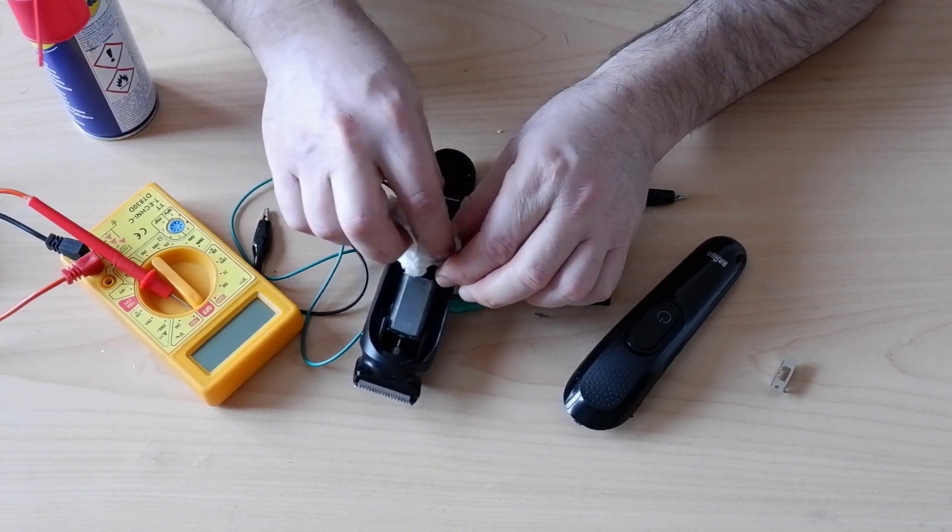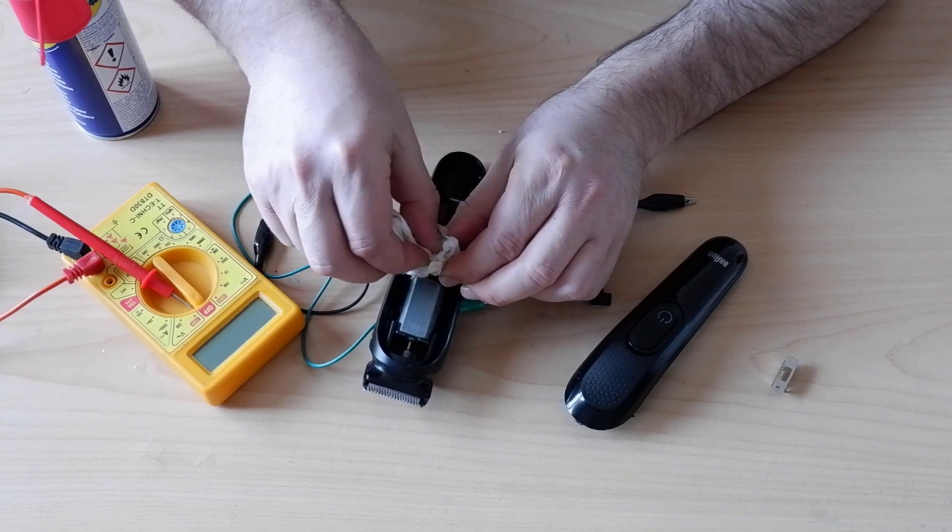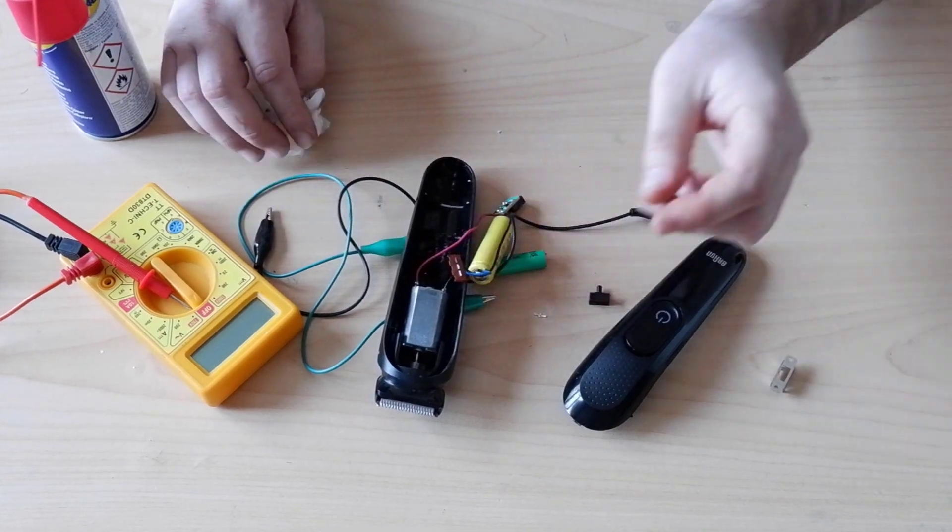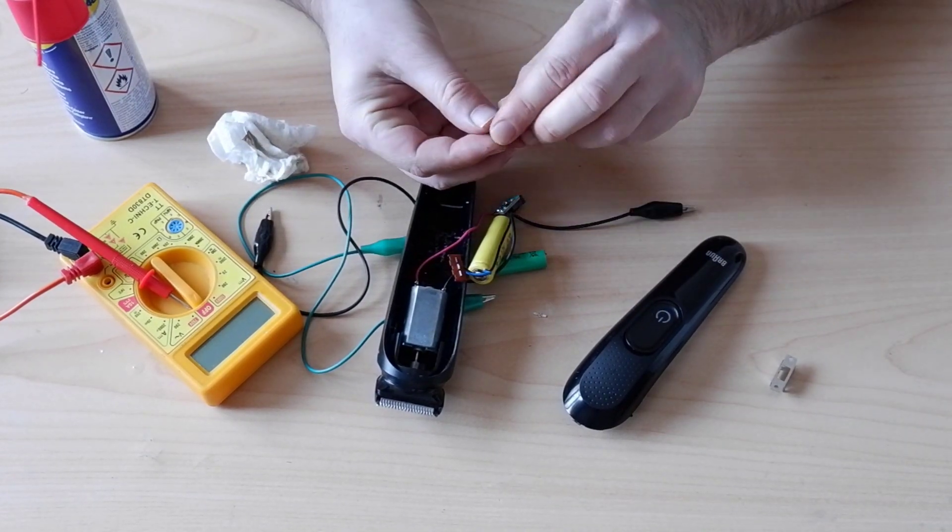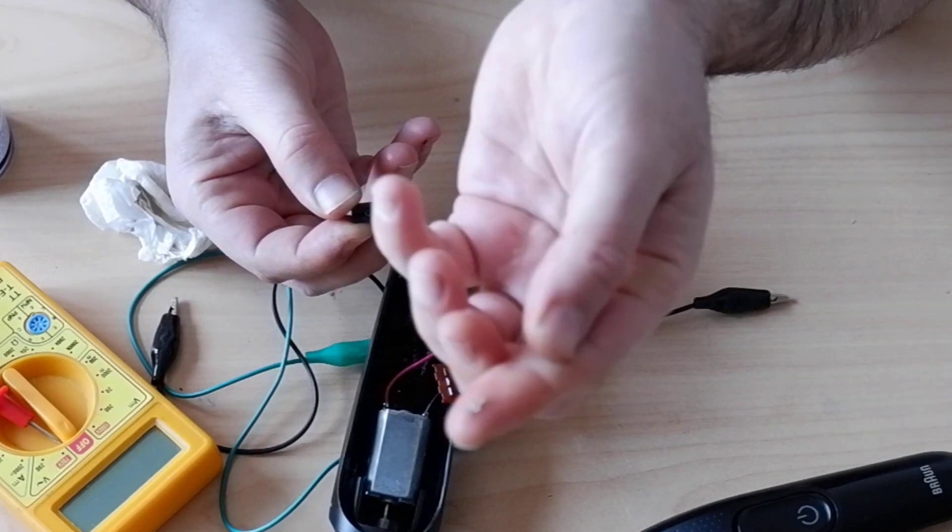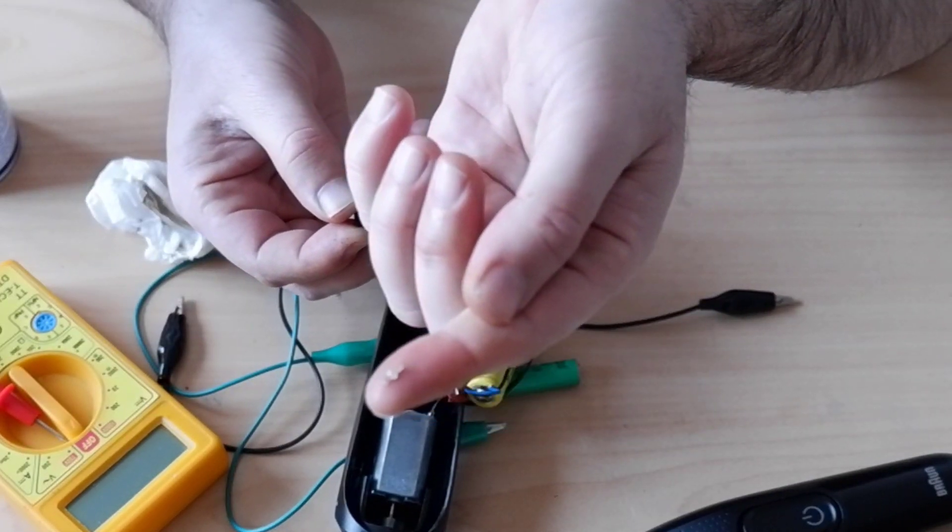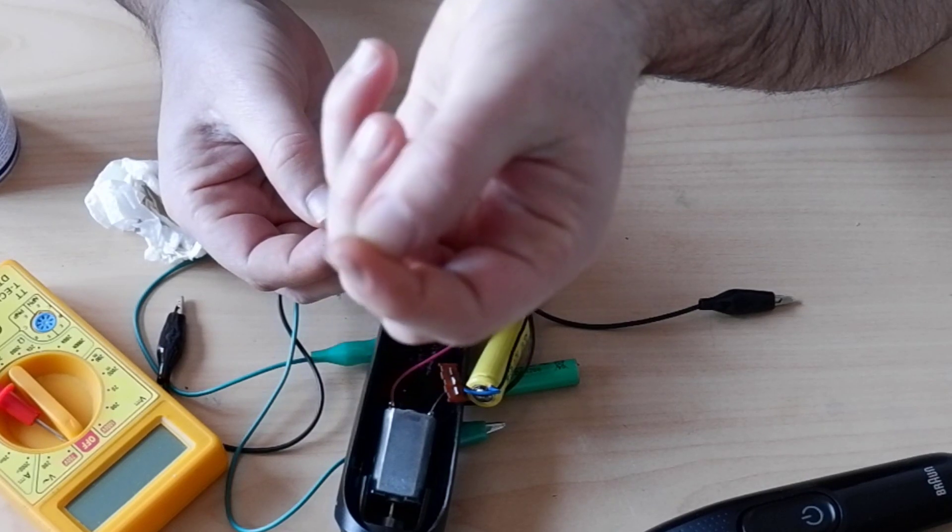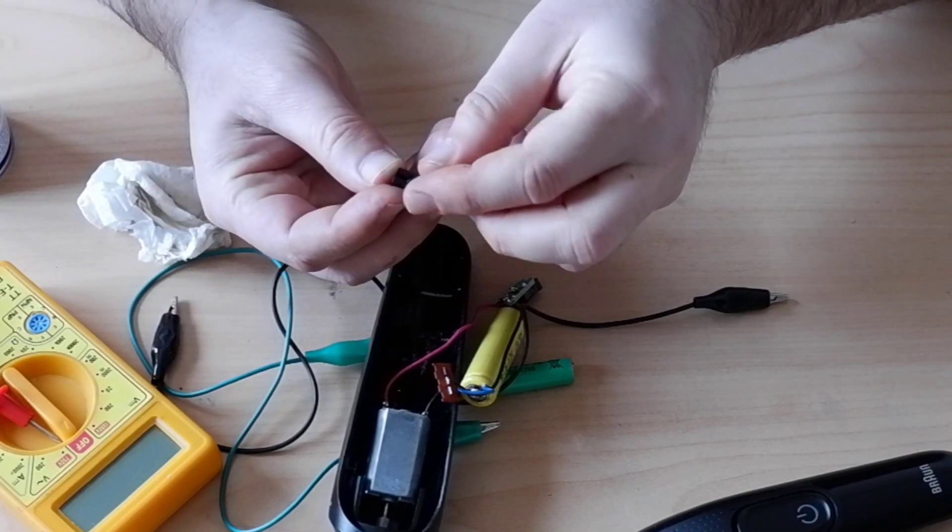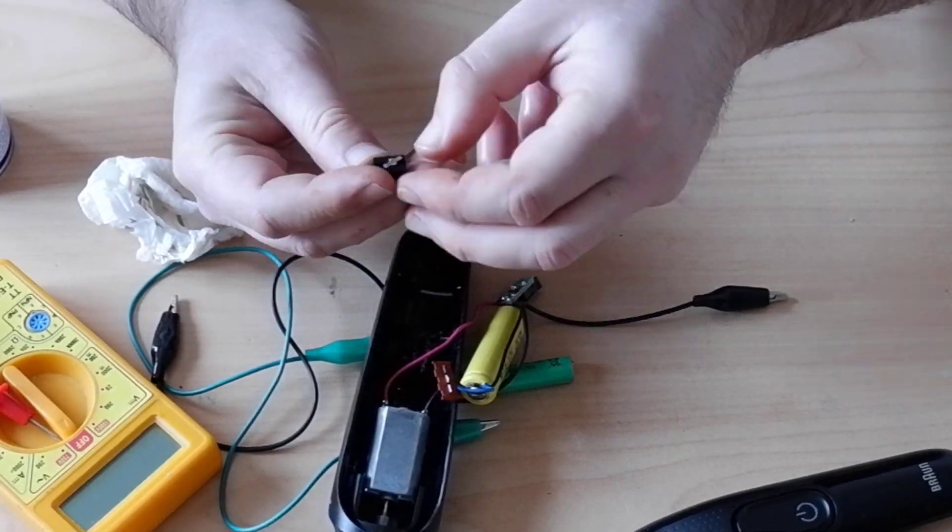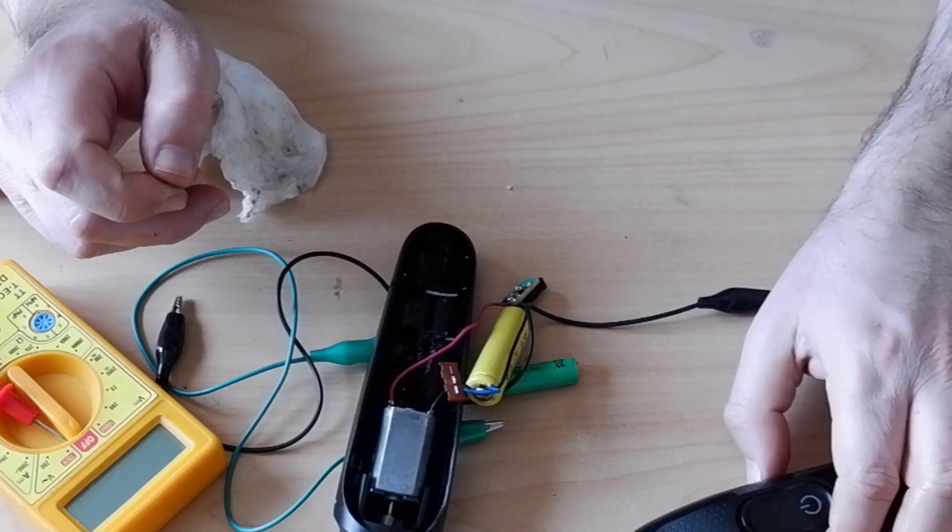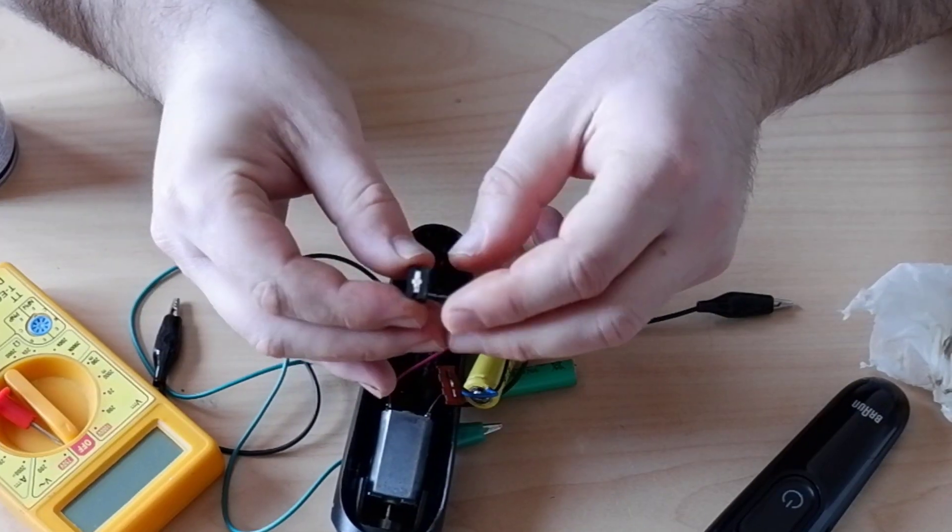After wiping and drying it nicely, we'll install it back. Let's see if it will be fixed. Will it be fixed? We're curious. Now we have this part. This is the part that completes the circuit. This could also be oxidized, could be in bad condition.